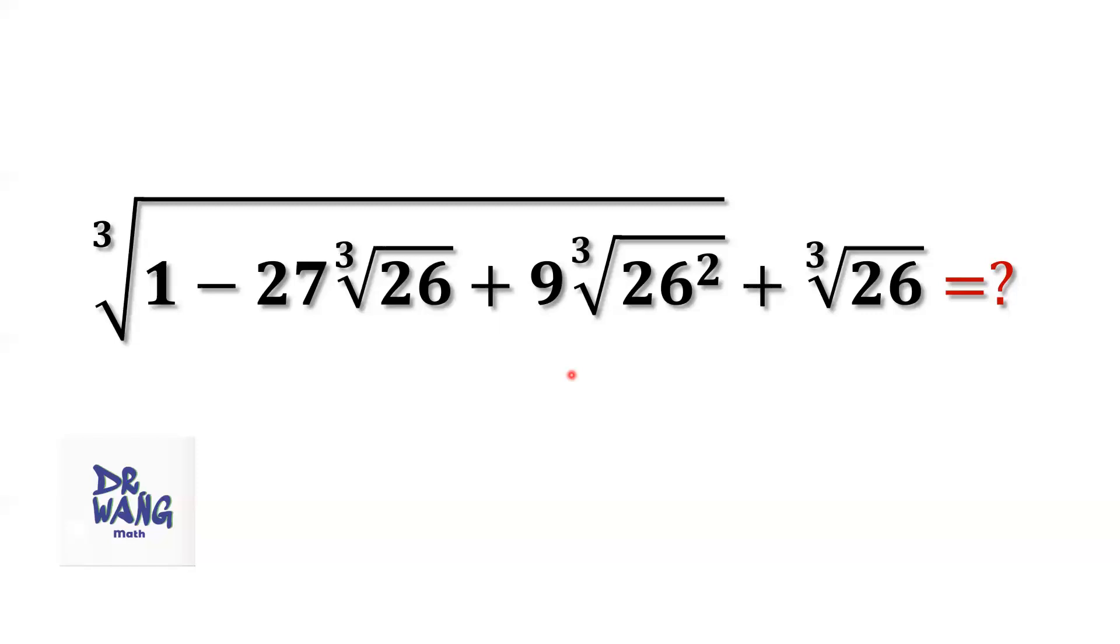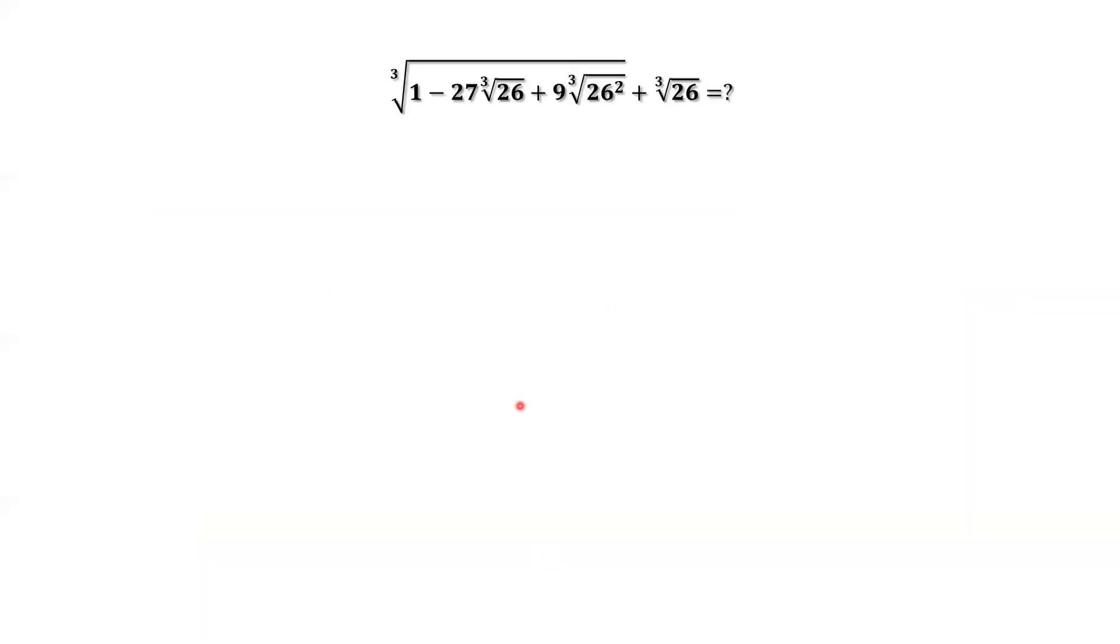How to simplify the sum of two radicals? We apply the following important binomial formula. x minus y to the power 3 equals x to the power 3 minus 3x squared y plus 3xy squared minus y to the power 3.